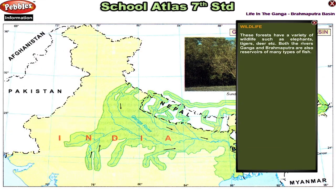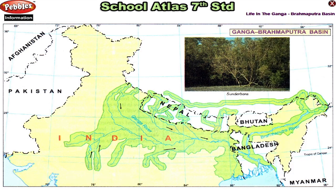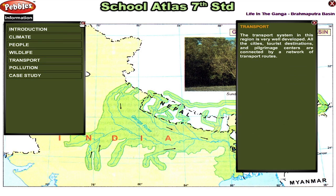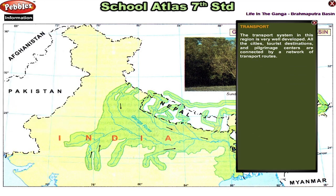Wildlife. These forests have a variety of wildlife such as elephants, tigers, deer, etc. Both the rivers, Ganga and Brahmaputra, are also reservoirs of many types of fish. Transport. The transport system in this region is very well developed. All the cities, tourist destinations and pilgrimage centers are connected by a network of transport routes.